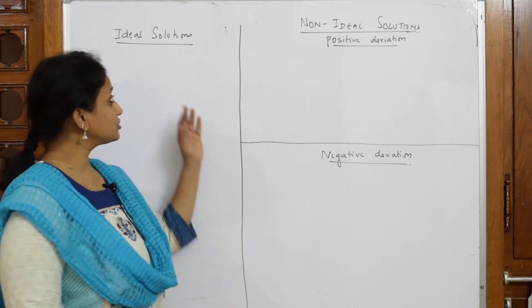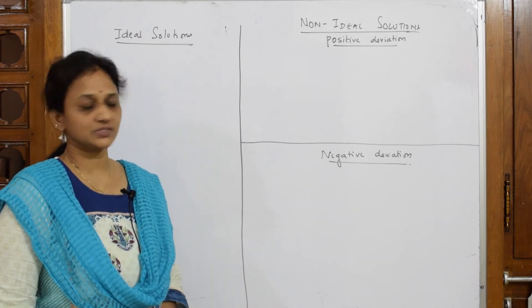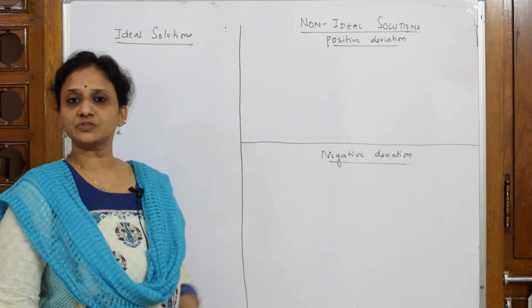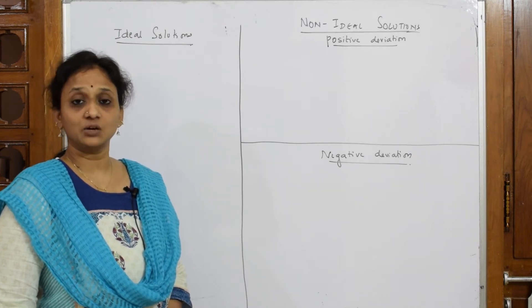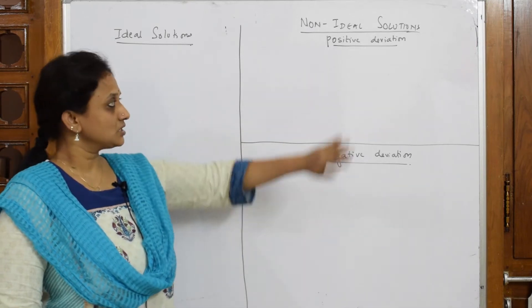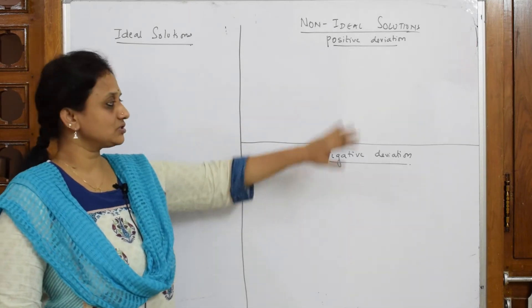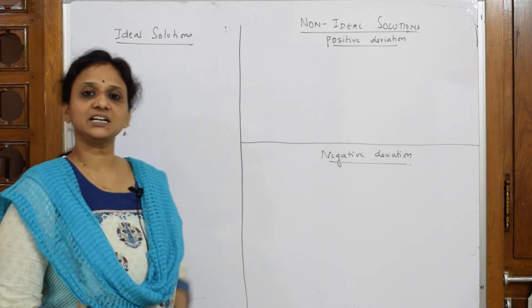I said the ideal solutions are those which obey Raoult's law. I've also listed out the conditions. Non-ideal solutions are those which do not, means delta H mixing as well as delta V mixing both are not equal to zero. That means either higher value or lower value, so when it is showing the deviations, it may be a positive deviation from Raoult's law or it may be a negative deviation from Raoult's law.